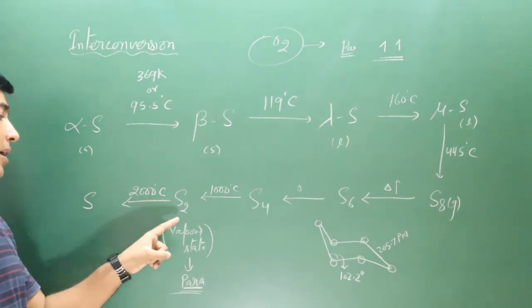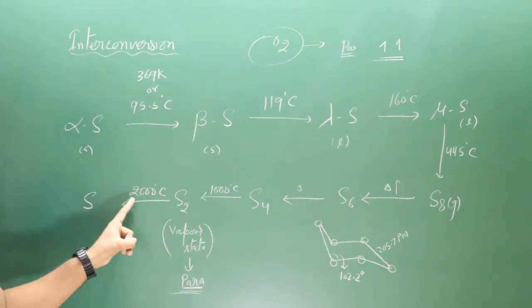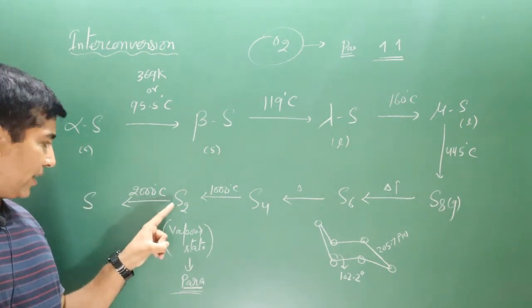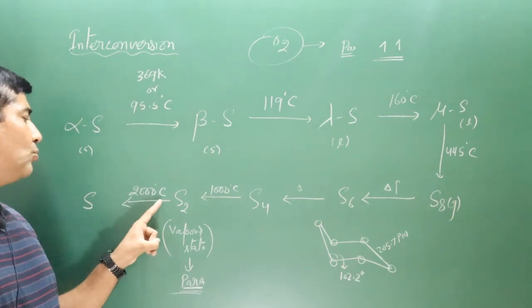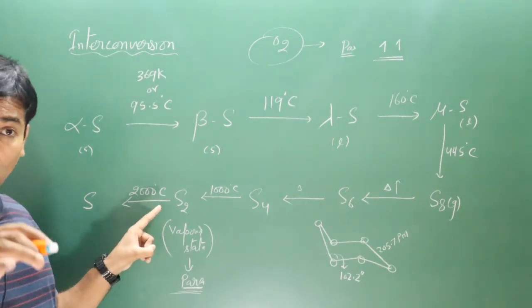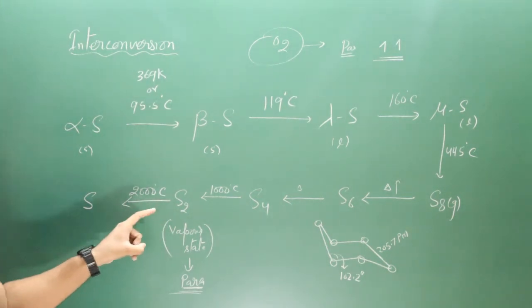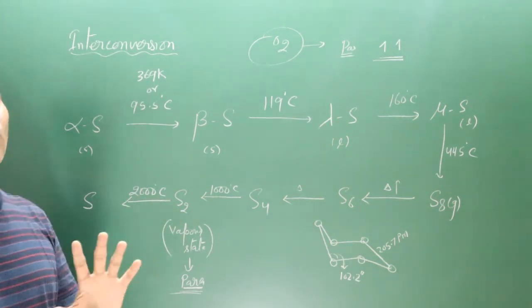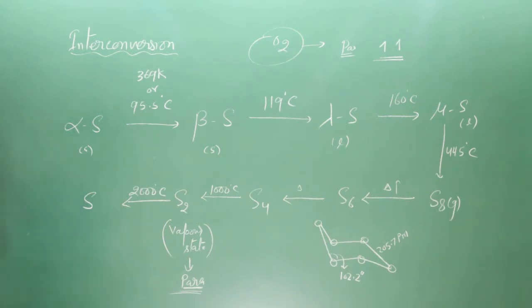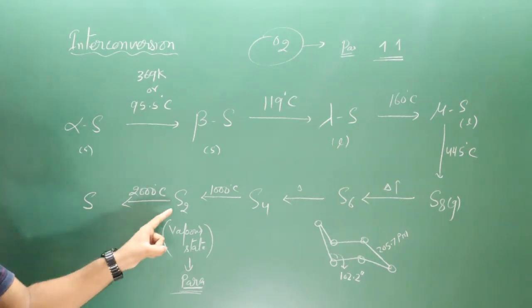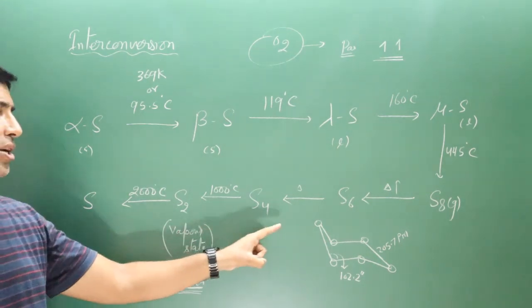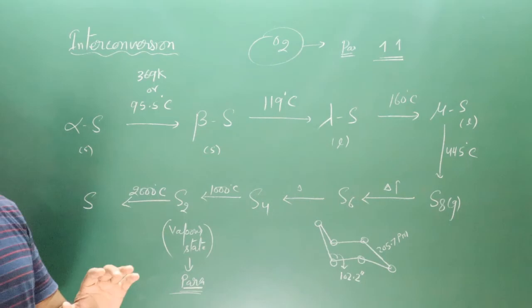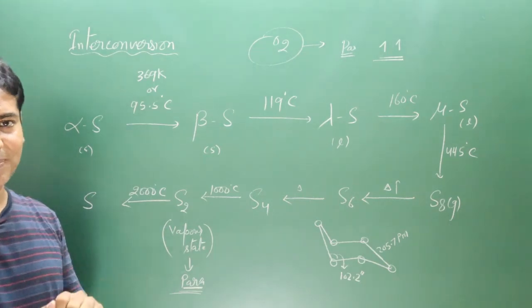When S2 is further heated at 2000 degrees Celsius, it converts into monoatomic sulfur S1. So the progression goes from S8 (octaatomic), to S6 (hexaatomic), to S4 (tetraatomic), to S2 (diatomic), and finally to S1 (monoatomic sulfur).